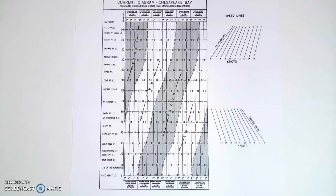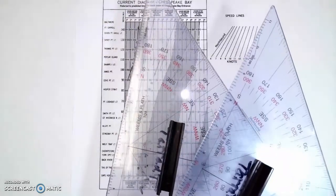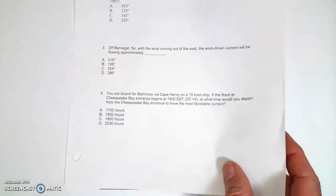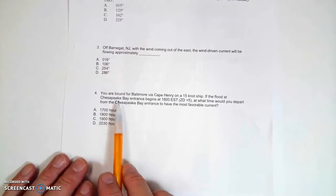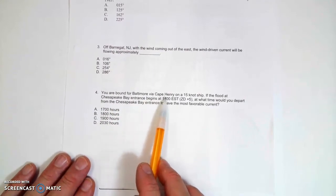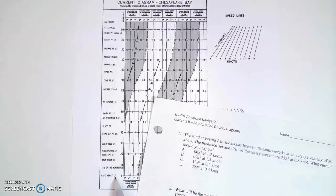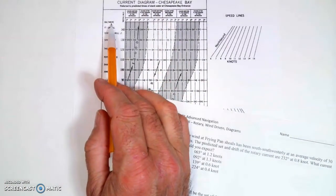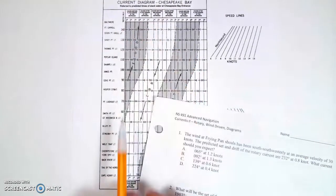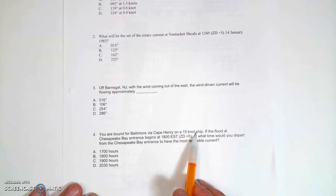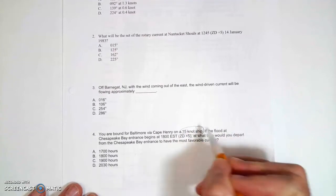I'm going to demonstrate a current diagram problem. In order to do that, I need the current diagram from the current tables, and I also need a couple of triangles. We're going to look at this problem: you're bound for Baltimore via Cape Henry. That means we've got to use the Chesapeake Bay chart — Cape Henry is the mouth, and Baltimore is all the way up at the top. It's a 15-knot ship, so we're making 15 knots.